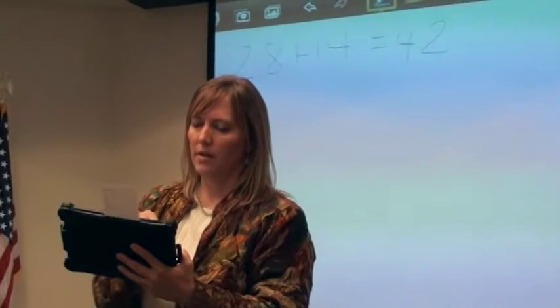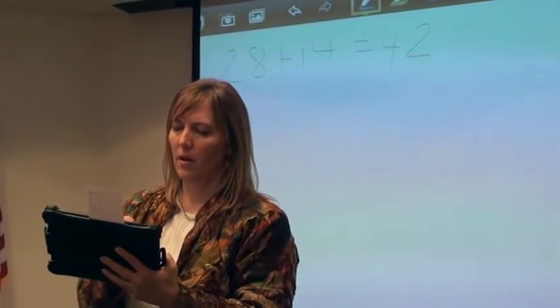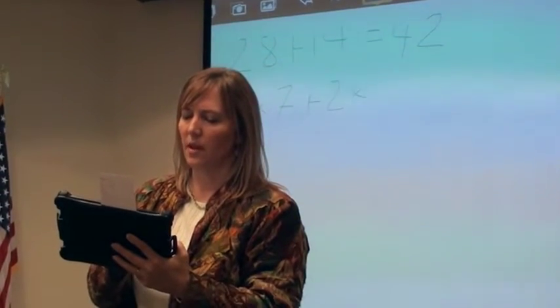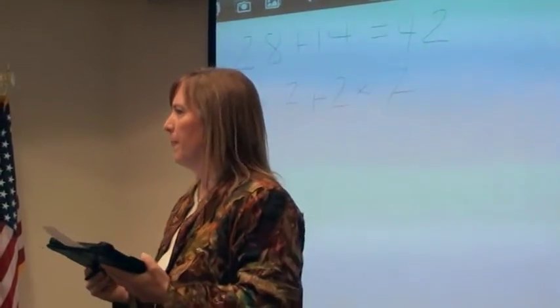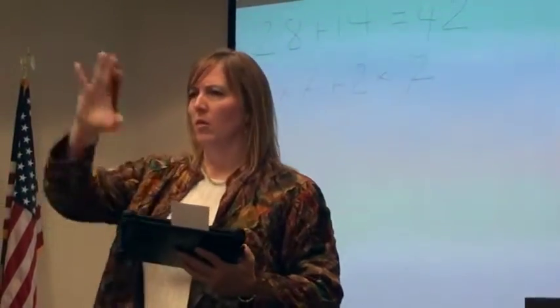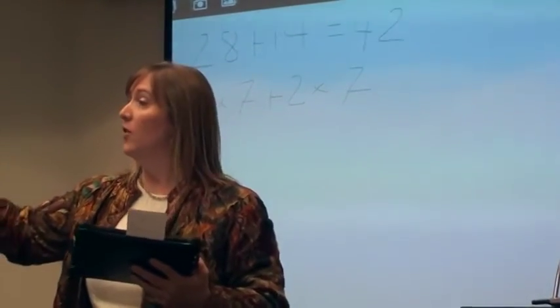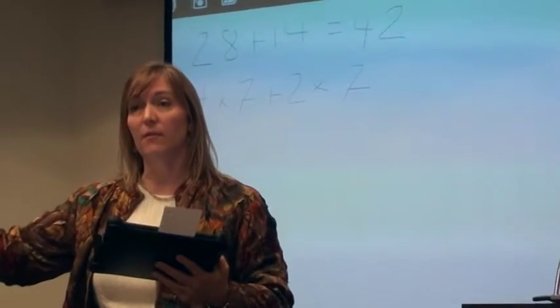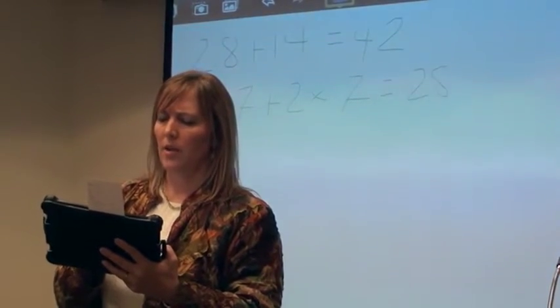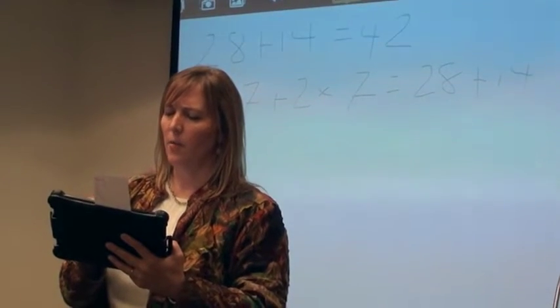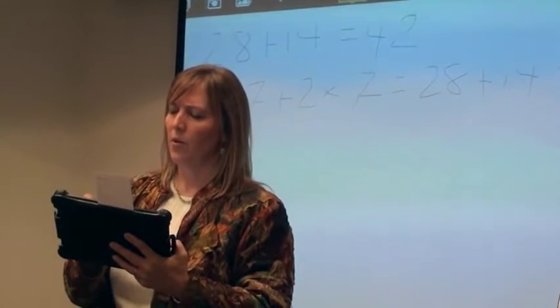The next problem in our string is: what is 4 times 7 plus 2 times 7? Go ahead and figure that out. If you don't know your multiplication facts, you're welcome to ask somebody. If you know 2 times 7, you can double it to get 4 times 7. So that becomes: what is 4 times 7? 28 plus 14. And what is that? 42. Weird.